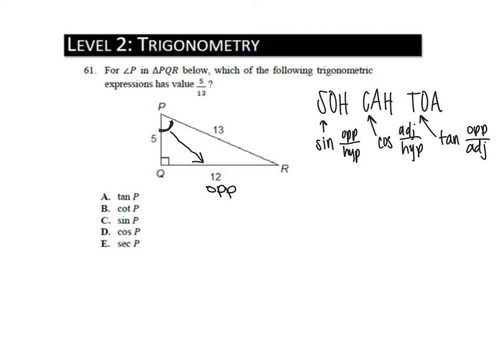Across from the angle is always the side that's your opposite. The hypotenuse is always across from the right angle. The third side is always called adjacent. So if we look at 5 over 13, that's adjacent over hypotenuse. Adjacent over hypotenuse is cosine, so our answer would be cosine P.